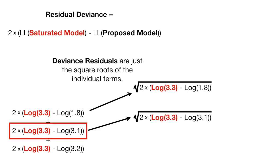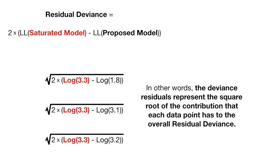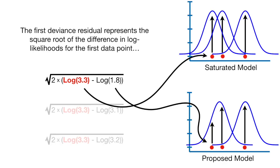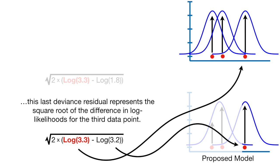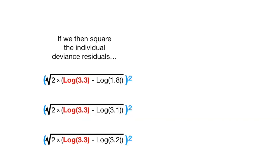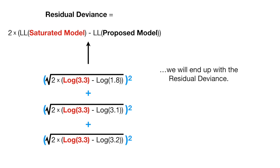Deviance residuals are just the square roots of the individual terms. In other words, the deviance residuals represent the square root of the contribution that each data point has to the overall residual deviance. The first deviance residual and the second deviance residual represent the square root of the difference in log likelihoods for each data point. If we then square the individual deviance residuals and add them up, we will end up with the residual deviance.